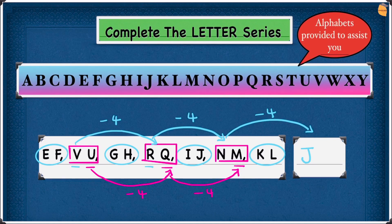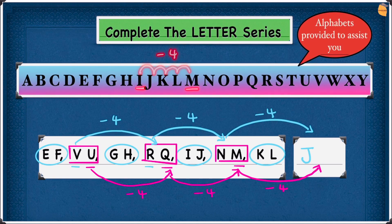So now to give us the second part of our answer we have to do minus 4 from M. Looking at the alphabet, M is here — minus 4: 1, 2, 3, 4 — if we do minus 4 we land at I. So the second part of our answer is I and the answer is JI.